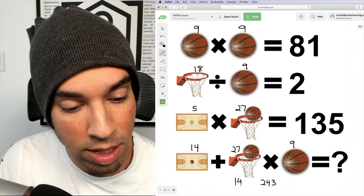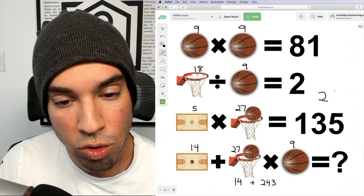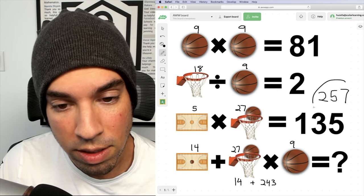Then we carry out this last step where we add them together. 14 plus 243 is 257.